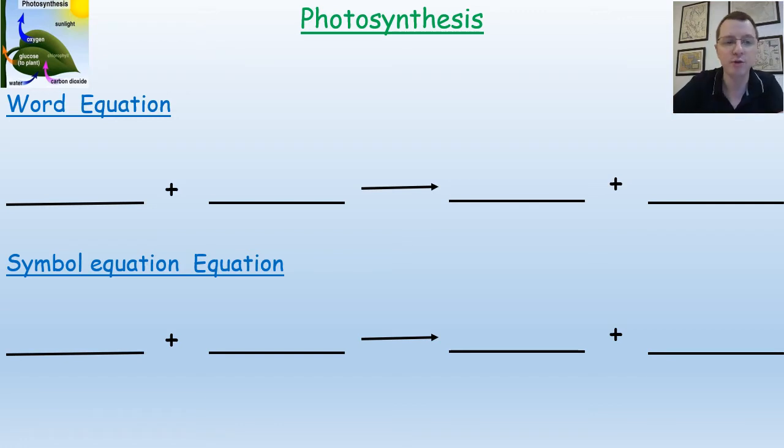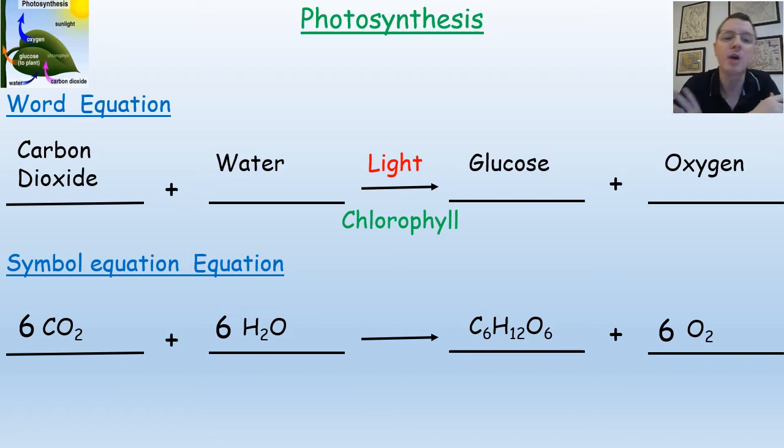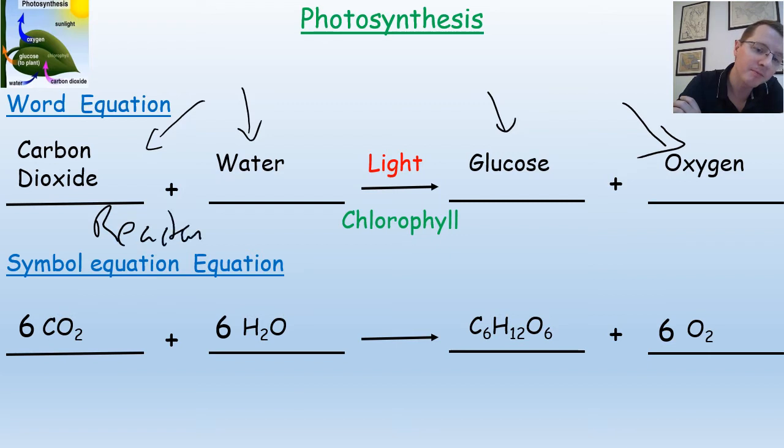So let's start first with the word equation. The word equation is carbon dioxide plus water gives glucose plus oxygen. All these words that I've written in black here, these are the word equation. These are at the beginning the reactants and at the end the products that are made. If you are asked in an exam to state the word equation, it's only the words in black that you need here. Carbon dioxide plus water gives glucose plus oxygen.